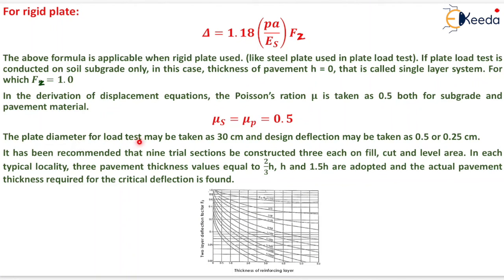The plate diameter for load test may be taken as 30 centimeter and design deflection may be taken as 0.5 or 0.25 centimeter. It has been recommended that 9 trial sections be constructed, 3 each on fill, cut and level area. In each type locality, 3 pavement thickness values equal to 2/3 H, H and 1.5 H are adopted and the actual pavement thickness required for the critical deflection is found. That is all about the design of flexible pavement.